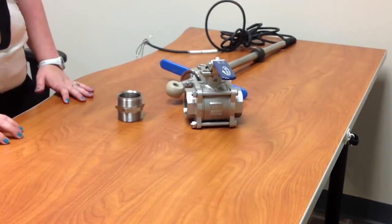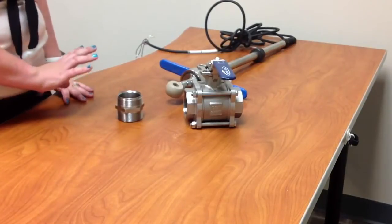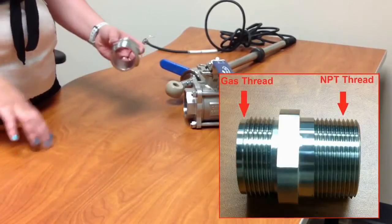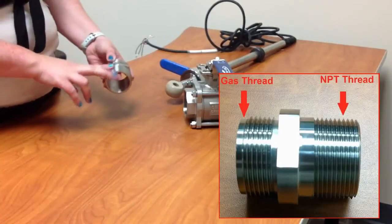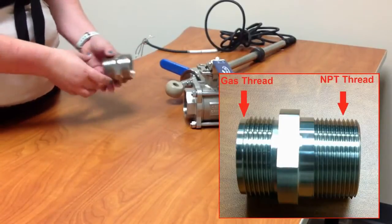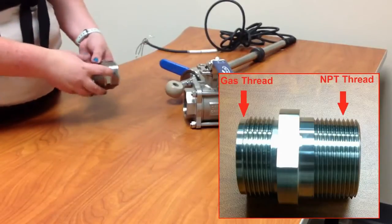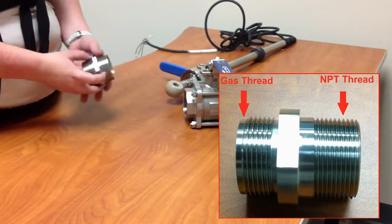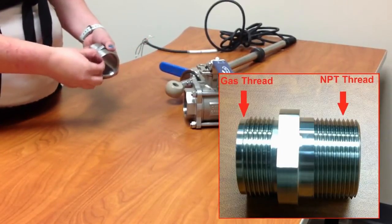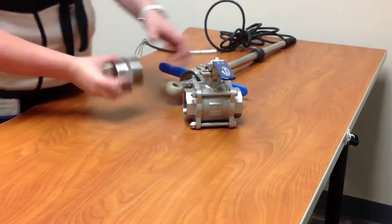Quickly we're going to go over the installation steps of your PR-10 assembly into your process. In your box you'll have a process adapter. There's two different types of threads: an NPT thread and a gas thread. The NPT thread goes into the ball valve. The gas thread goes into your PR-10 assembly. The gas thread has a little bit of a solid lip so you know that's the actual gas thread.